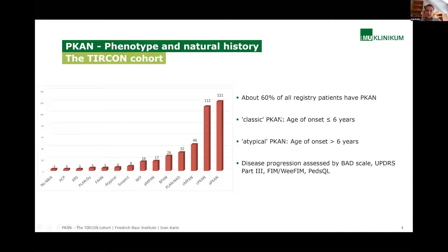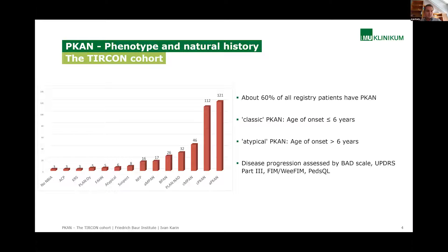We have divided PKAN into two phenotypes: a classic phenotype and an atypical phenotype, mainly distributed by age of onset. For the classical phenotype, onset is up to six years of age. We measure disease progression yearly, assessed by the BAD scale for dystonia, the UPDRS Part 3 scale for motor function, FIM, VFIM, and PETSQL for quality of life.